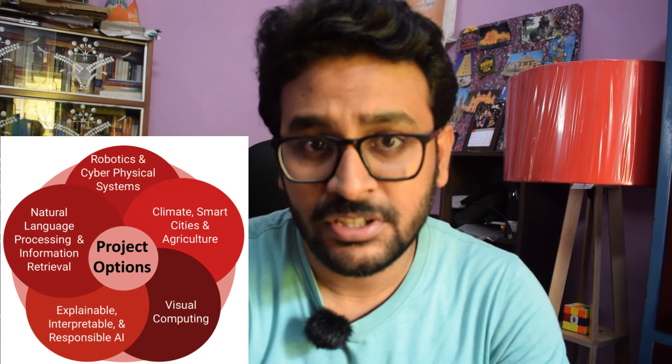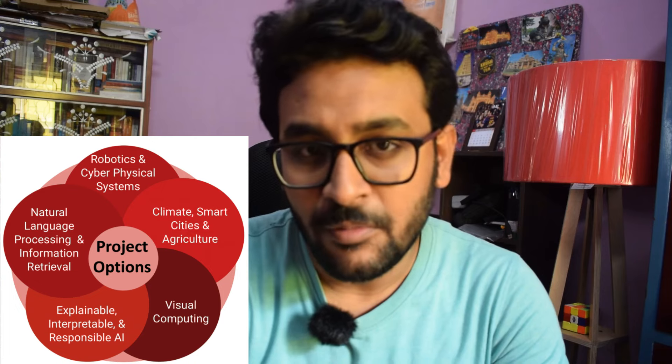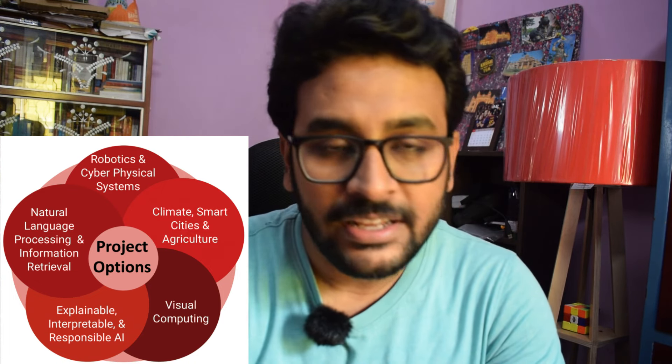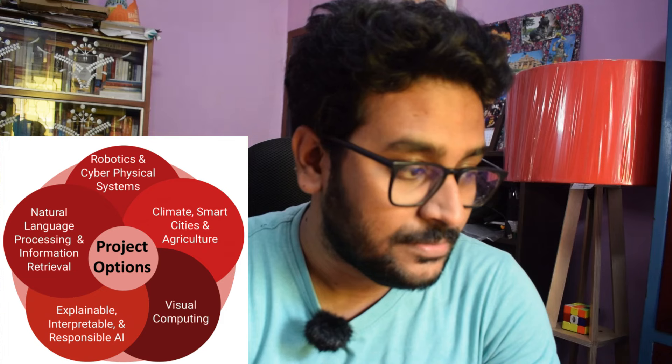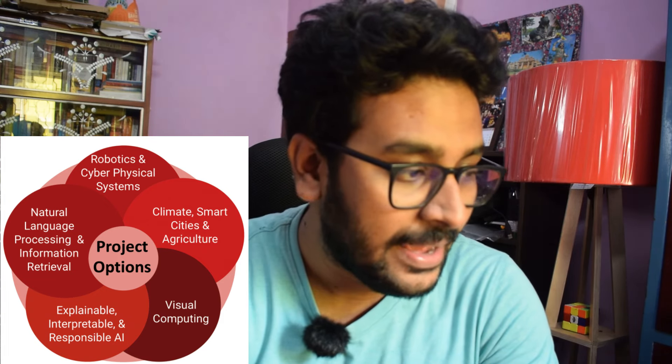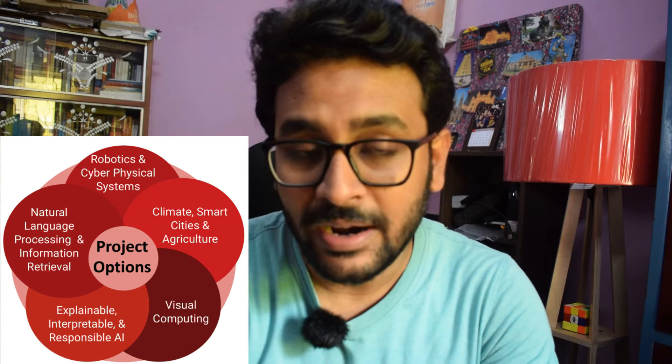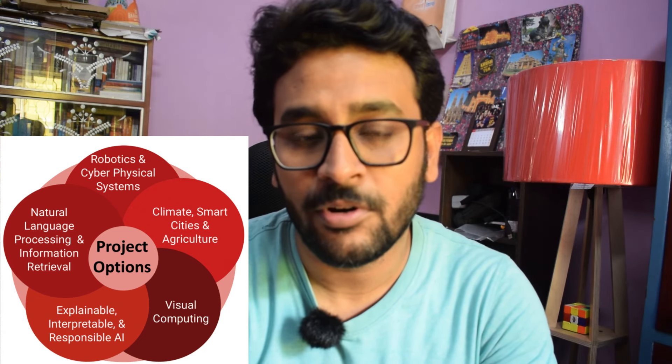For your M Tech projects — MTP one, MTP two, and MTP three — completed across the second, third, and fourth semesters, you can choose from five broad project domains offered by the center. Those domains are: Natural Language Processing and Information Retrieval, Visual Computing or Computer Vision, Robotics or Cyber Physical Systems, Explainable, Interpretable and Responsible AI, and finally, Climate, Smart Cities and Agriculture — meaning AI applied to smart cities, climate, and agriculture. These are the five broad areas from which you can choose your project.